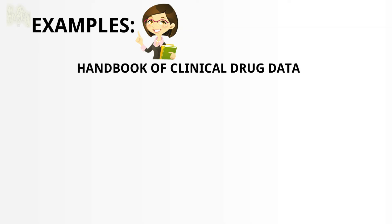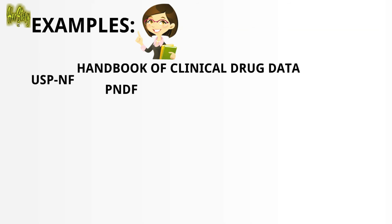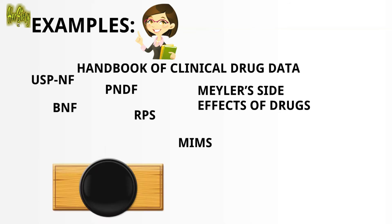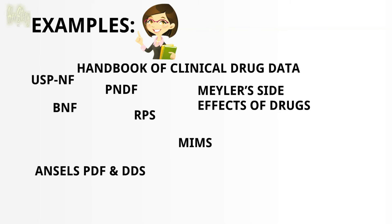Examples of tertiary resources include: the Handbook of Clinical Drug Data, USP-NF (a reading assignment to know its meaning), PNDF, Meyler's Side Effects of Drugs, RPS, BNF, MIMS, Uncle's PDF, DDS — which we used during Drug Delivery Systems — and Merck's Manual.